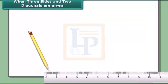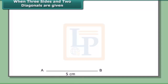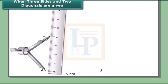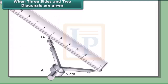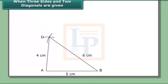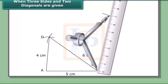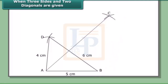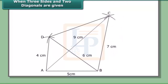Steps: Draw AB = 5 cm. With A and B as centers and 4 cm and 6 cm as radii respectively, draw arcs to cut each other at point D. Join AD and BD. With A and B as centers and 9 cm and 7 cm as radii respectively, draw arcs to cut each other at C. Join AC, BC, and also DC. ABCD is the required quadrilateral.